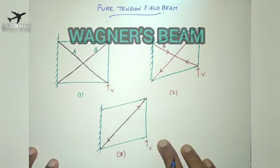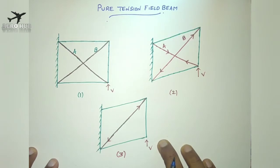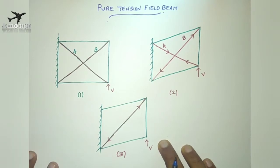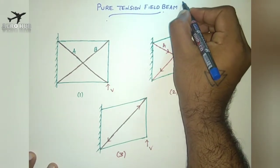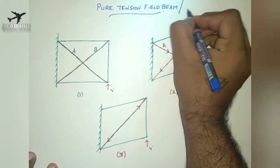Hello everyone, welcome back to AeroHub and welcome to the series of lectures in Aerospace Structures. In the previous lecture we discussed about the design of riveted joints, and in this lecture we will discuss about the pure tension field beam, also called the Wagner beam.